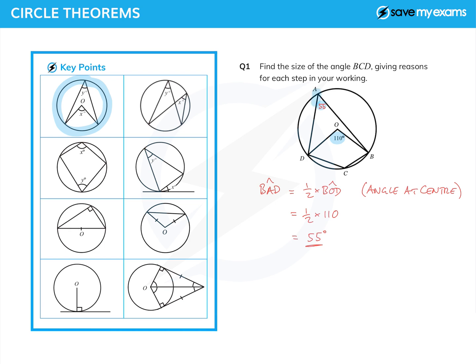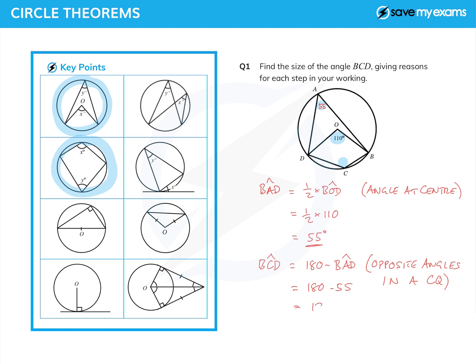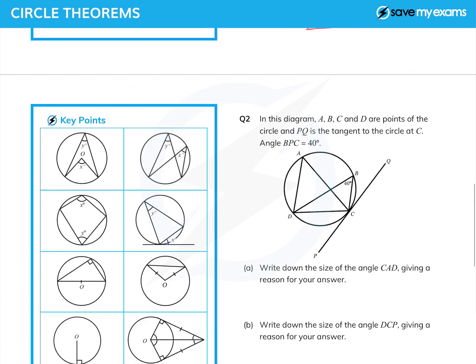So I've found that angle. Now does that allow me to find BCD? Yes it does, because now I have a quadrilateral with all four points on a circle — in other words it's a cyclic quadrilateral — and opposite angles in a cyclic quadrilateral add up to 180. So the angle BCD will be 180 minus the angle BAD. I'll write CQ for cyclic quadrilateral, so that's 180 minus 55, which is 125 degrees.